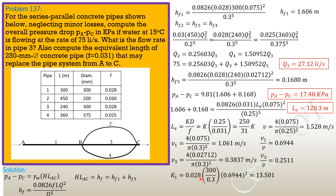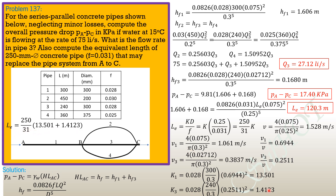Substituting into L_eq equals (D/F) times (K1 + K3): L_eq equals (0.25 / 0.031) times (13.501 + 1.4123) equals 120.3 meters, which matches the earlier result. Both methods yield the same answer, confirming that the simpler direct formula is the preferred approach for finding equivalent length.